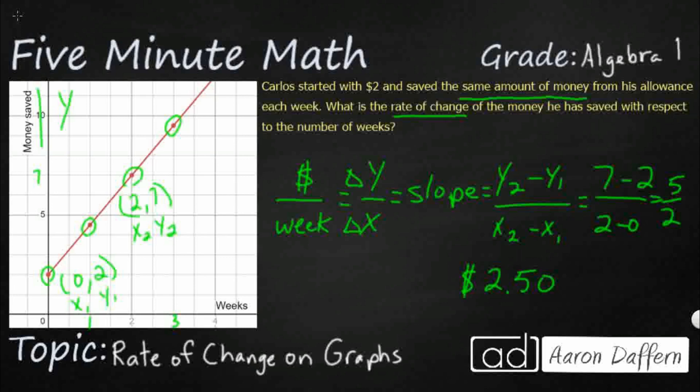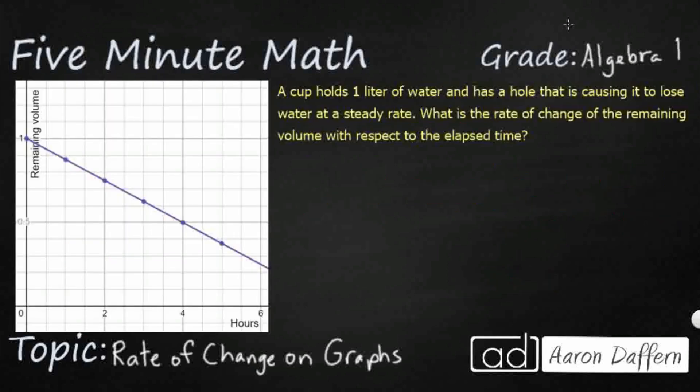Since we're dealing dollars and cents, looks like he's saving $2.50 per week. Let's look at another example. Now we have a cup holds a liter of water. So you see we have our starting right there at 1 liter. That's our y-intercept. And it has a hole that causes it to lose water at a steady rate.